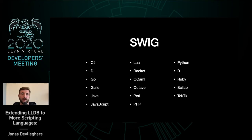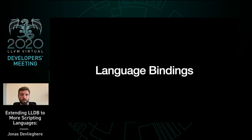SWIG supports many languages, not just Python. Technically it would be possible to generate bindings for any of the languages listed here, although this requires a bit of configuration which comes with an extra maintenance burden on the project. Although SWIG is not strictly necessary to implement a new scripting language, it made adding Lua support a lot easier. For Lua, we only focused on making the bindings available from within LLDB. This is done by linking against the bindings generated by SWIG and registering them with the Lua runtime in the plugin.